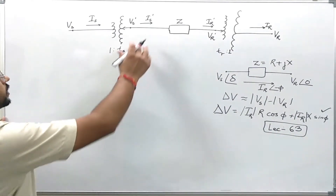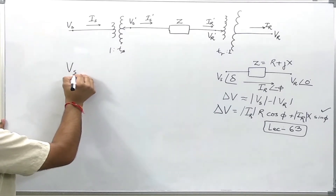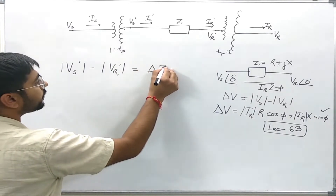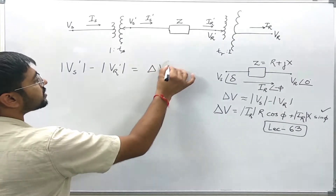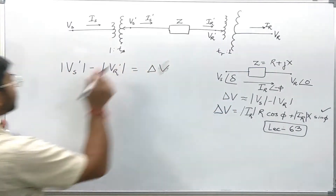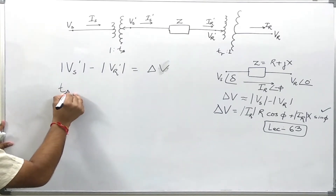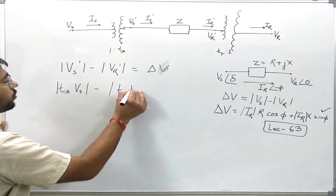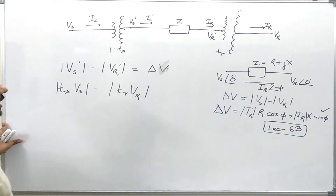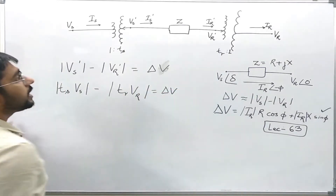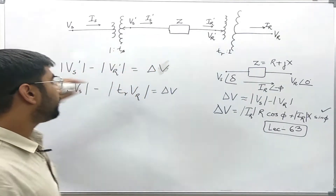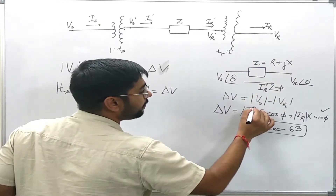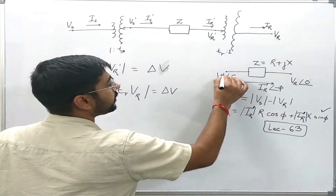Now I am going to write Vs prime minus Vr prime equals delta V. Here Vs prime equals Ts times Vs and Vr prime equals Tr times Vr. The current through this impedance is Ir prime, so delta V can be written in terms of Ir prime, and the voltages across the impedance are Vs prime and Vr prime.